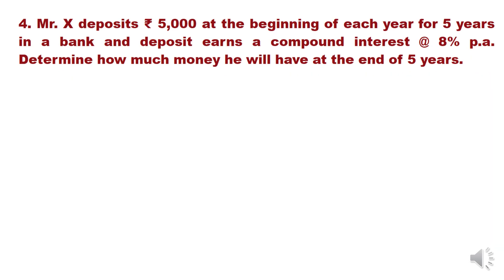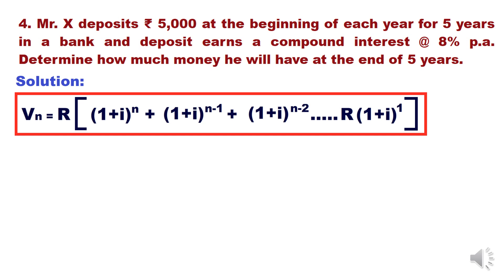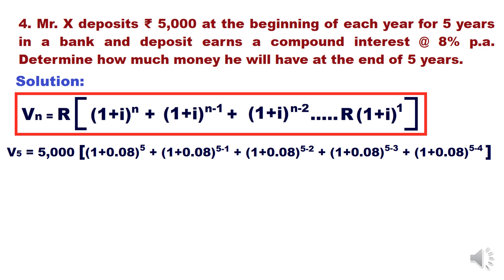Let's take a problem: X deposits 5,000 at the beginning of each year for five years in a bank, and the deposit earns compound interest at the rate of 8% per annum. Determine the future value at the end of the fifth year. Since 5,000 is deposited at the beginning of every year for five years, we take 5,000 as the common factor, then make the summation of the factors — writing 8% as 0.08.